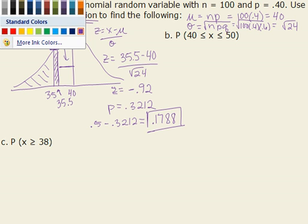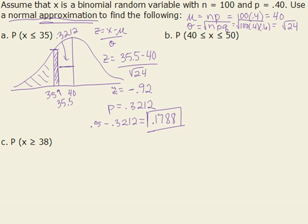Now we have, let me change colors here. Now we have the probability that x's are between 40 and 50. Well, what does that look like? Here's our mean of 40. And we want that to go up to 50. Again, we're going to have to approximate. And we're going to have to approximate twice using 50.5 as an x value and 39.5 as an x value.